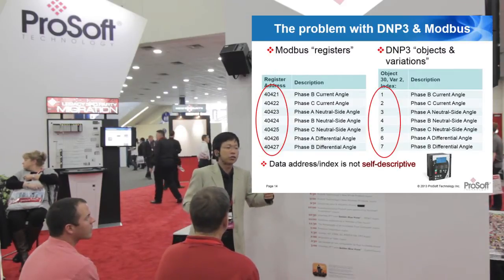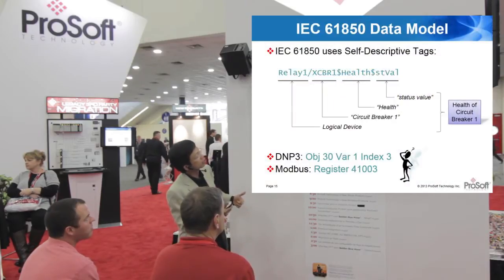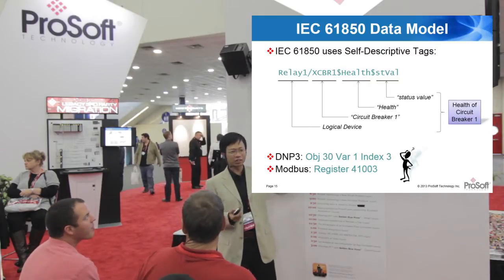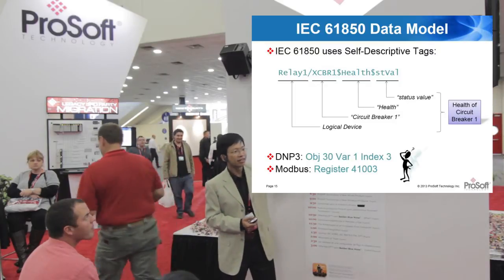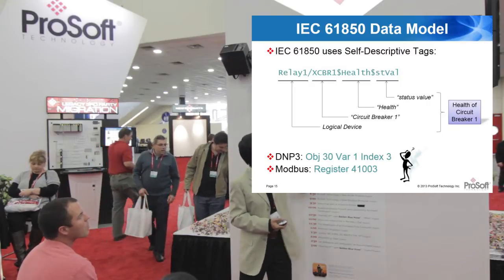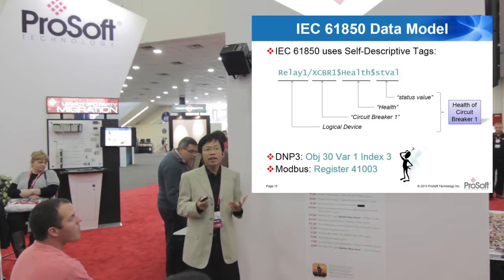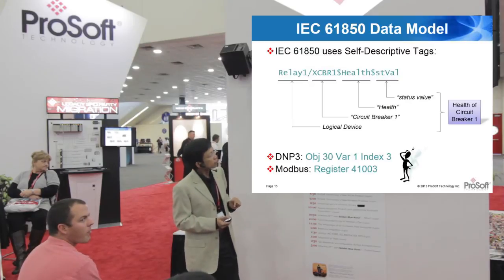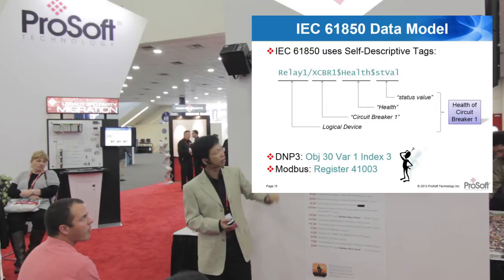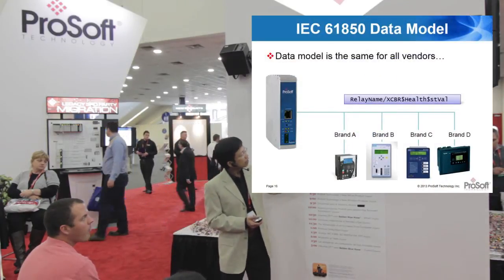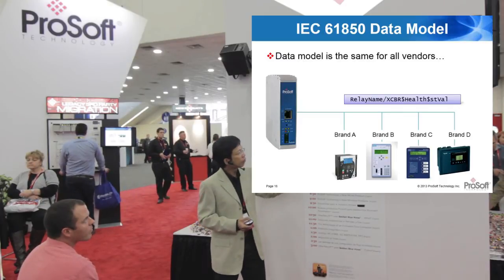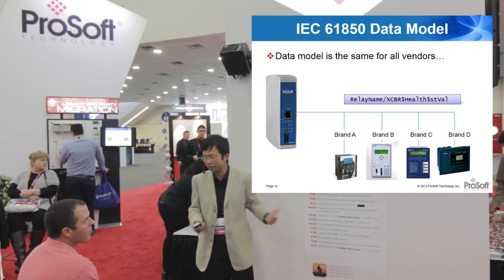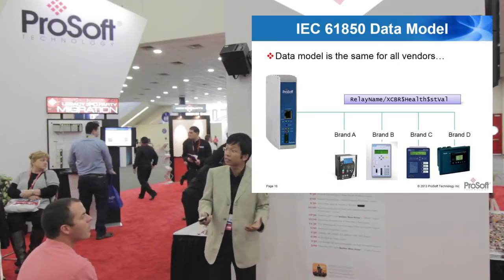This is where IEC 61850 tries to improve — it uses self-descriptive tags. IEC 61850 uses a tag like XCBR.Health.STVAL. It doesn't look very descriptive, but if you're familiar with the protocol, you'll know that XCBR refers to a circuit breaker, and Health.STVAL refers to the health status of that circuit breaker. Any device that complies with IEC 61850 uses the same data model — compared against DNP3 and Modbus, where there's no way to figure out what the contents are. This also gives users more brand independence: if you use different brands of overload relays, they all represent their health as XCBR.Health.STVAL, making you more flexible with your vendor and device selections.